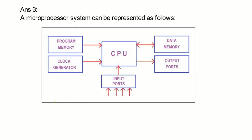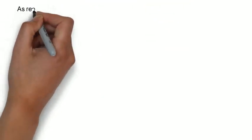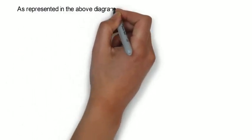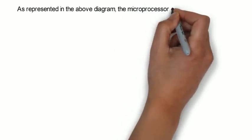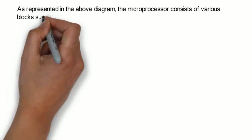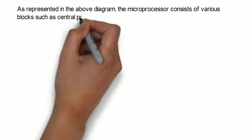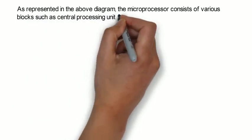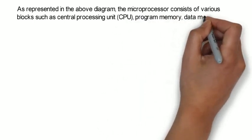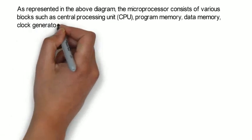As represented in the above diagram, the microprocessor consists of various blocks such as central processing unit CPU, program memory, data memory, clock generator, input and output ports.